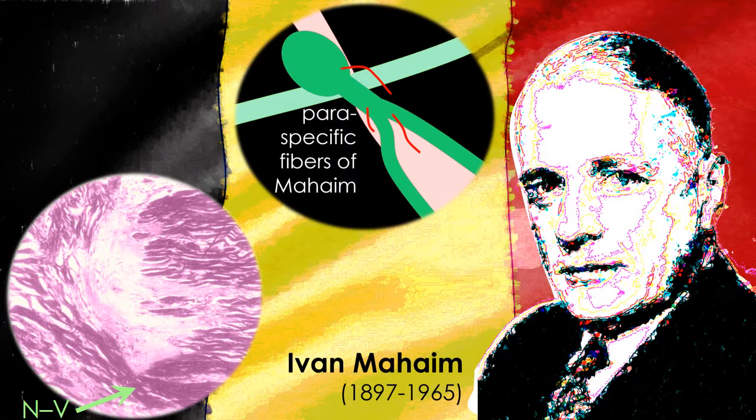Ivan Maheim, in the 1940s, described connections between the AV node or the bundle of His and the summit of the interventricular septum, and between the divisions of the bundle branches and the ventricular myocardium. These are the true Maheim fibers — the nodo-ventricular or fasciculo-ventricular connections.